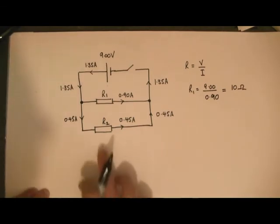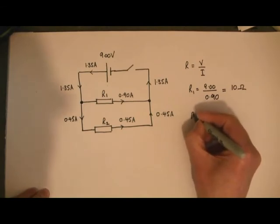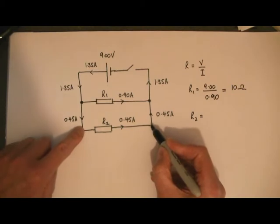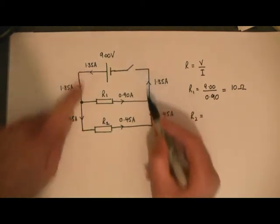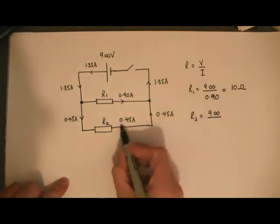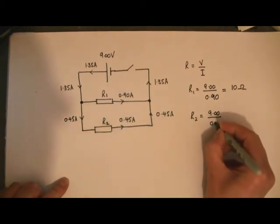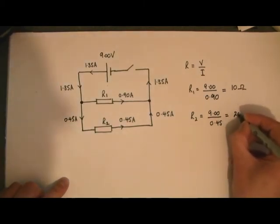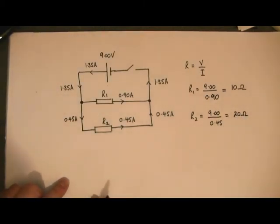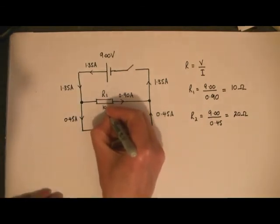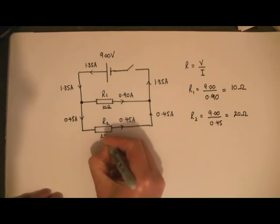We'll repeat that now for R2. So R2 equals the voltage across this branch — again the same as the battery, 9.00 volts — divided by the current flowing through that resistor, 0.45 amps. So I've got 10 ohms here and 20 ohms here.